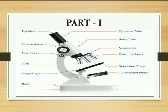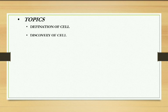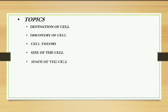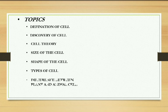In this first part, we will cover some topics: number 1, definition of the cell; second, discovery of cell; third, cell theory; then size of the cell; shape of the cell; type of the cell; and the last one is difference between plant and animal cell.